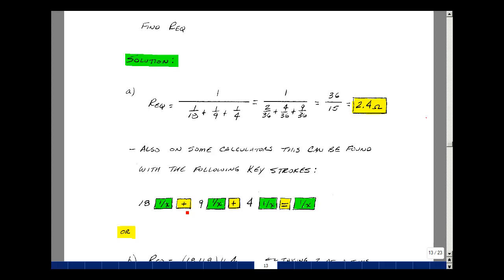On calculators and also in programming, division and multiplication have precedent over addition. And then if I add to that 1 quarter, hit 4 and then 1 over, and that equals, it'll then add 1 over 18 plus 1 over 9 plus 1 over 4. And then if I hit 1 over again, I get the reciprocal of results, and that's 2.4.